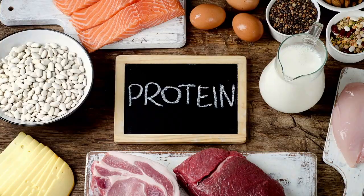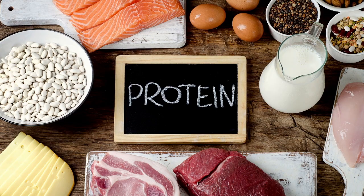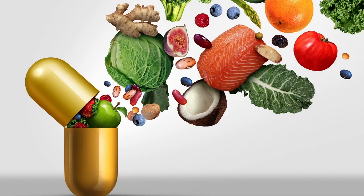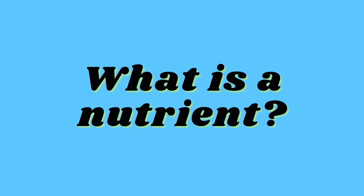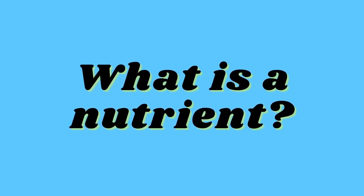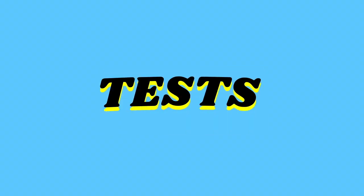The food we eat contains five major nutrients: carbohydrates, proteins, fats, vitamins, and minerals. In addition, food also contains dietary fibers and water, which are also needed by our body. A nutrient is a substance which is essential for growth and for maintaining life.